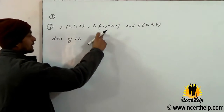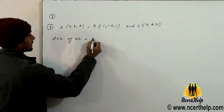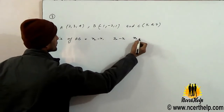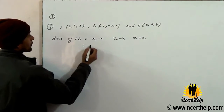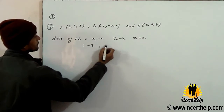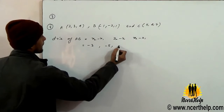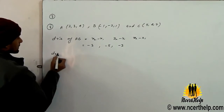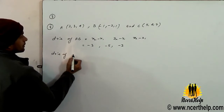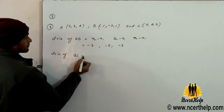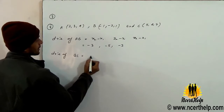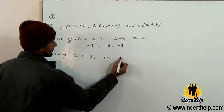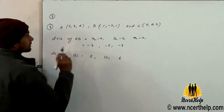X2 minus X1, Y2 minus X1. So the direction ratios of AB are minus 3, minus 5, minus 6. Direction ratios of BC are 6, 10, 6. Parallel.